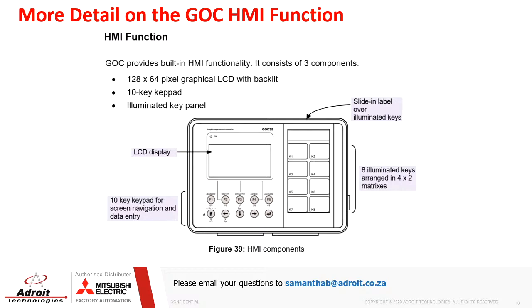Looking at the GOC HMI function, the HMI part can be found on the front side of the GOC while the PLC part is found at the back. The HMI part has an LCD screen and a 10-key keypad for navigation and data entry, which are programmable but not recommended to reprogram. It also has 8 illuminated keys which can accommodate user interaction as well as provide status indication via LEDs, utilizing different colors as well as blinking speeds to provide different messages to the end user.